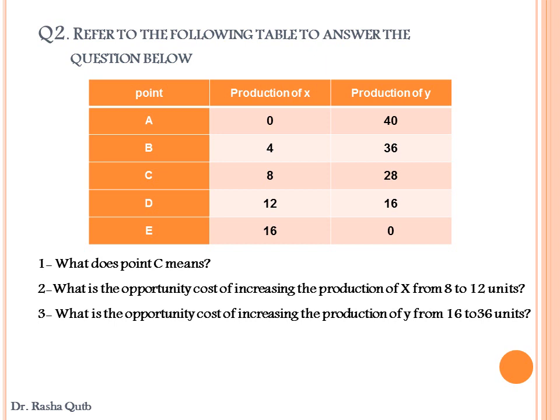Second: what is the opportunity cost of increasing the production of X from 8 units to 12 units? We are asked to determine the amount of Y given up in order to increase the production of X by 4 units. We are moving from point C to point D, giving up 8 units of Y — from 28 to 16. So the opportunity cost of increasing the production of X from 8 to 12 units is 8 units given up from Y.